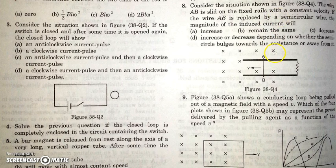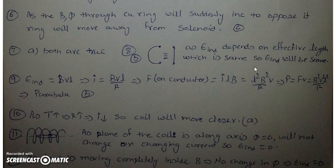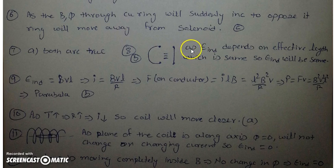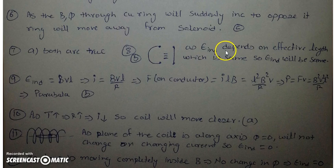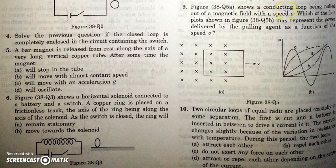In the next question, wire AB slides on a fixed rail with constant velocity. If this wire AB is replaced by a semicircular wire, what happens to the induced current? Since the induced EMF depends only on the effective length between the two ends of the conductor, replacing it with a semicircular wire of the same effective length keeps the EMF the same. The resistance will also be the same, so the induced current will also remain the same.